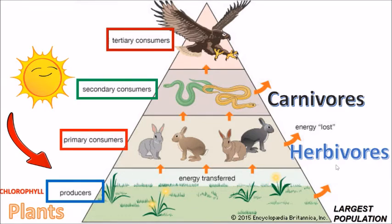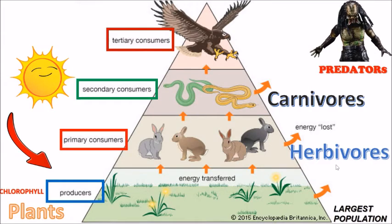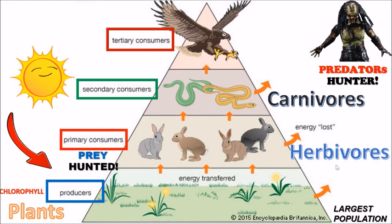These animals, which are known as tertiary consumers, are usually the predators, and predators are animals that always look for prey. So how do you remember what roles they play? For predators, they are always the hunter, and being the hunter, they will always be looking for animals. These animals are being hunted — so prey are being hunted.